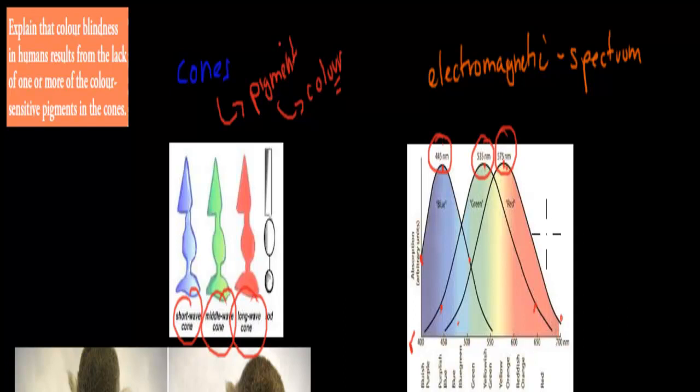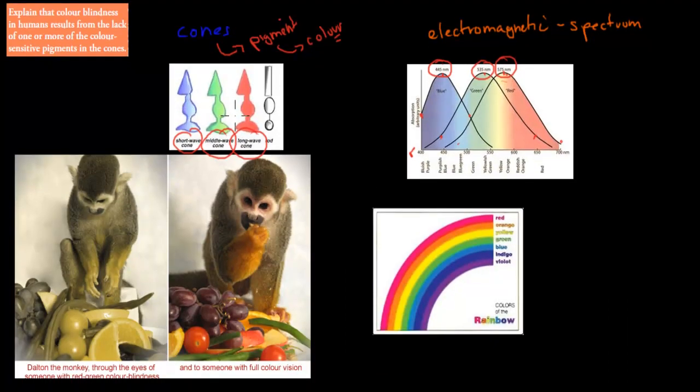We have these three cones. They have different wavelengths that they can pick up. They have their peaks, but they can still pick up the other colors on a lesser scale. The point being is with those three cones, what we can do is we can combine those three colors - blue, green, and red - to be able to see all of the actual colors of the rainbow.